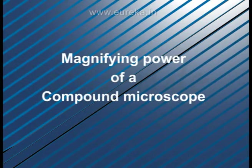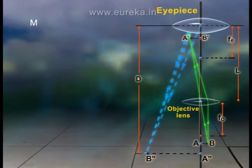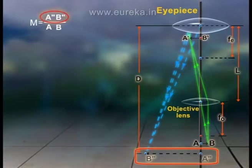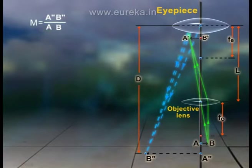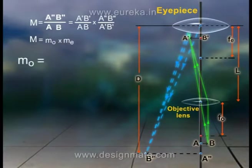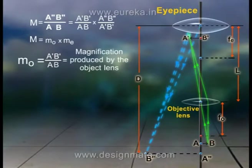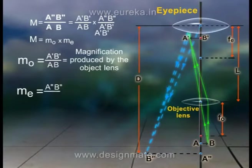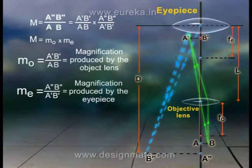The magnifying power M of the compound microscope is given by A''B'' upon AB, that is the ratio of the size of the final image to the size of the object. This ratio can also be represented as M = (A'B' / AB) × (A''B'' / A'B') = MO × ME, where MO = A'B' / AB is the magnification produced by the objective, and ME = A''B'' / A'B' is the magnification produced by the eyepiece.